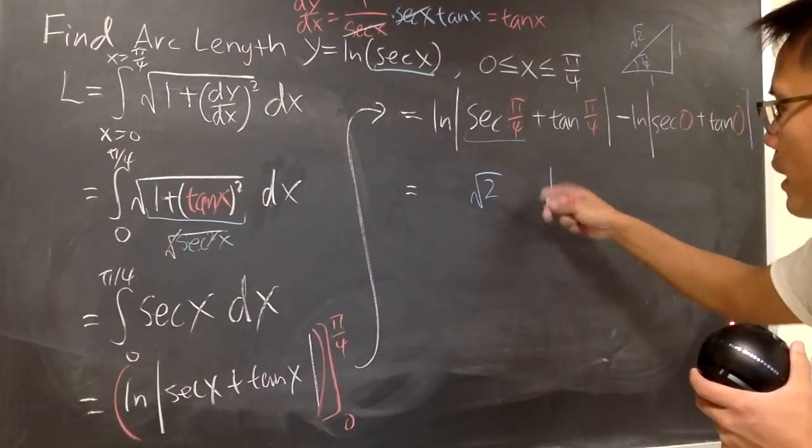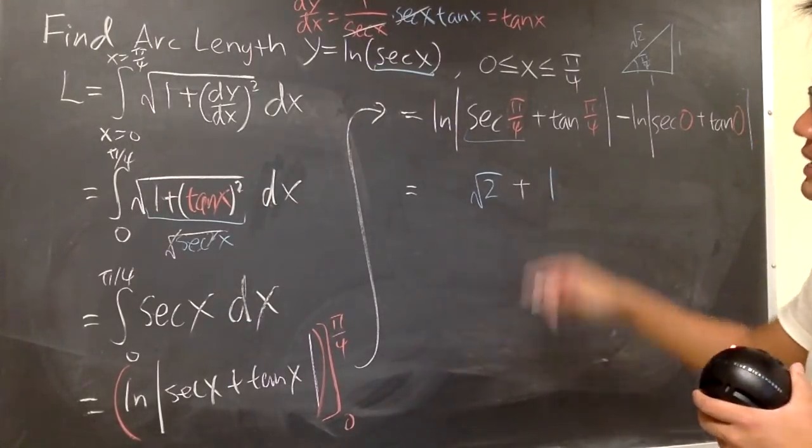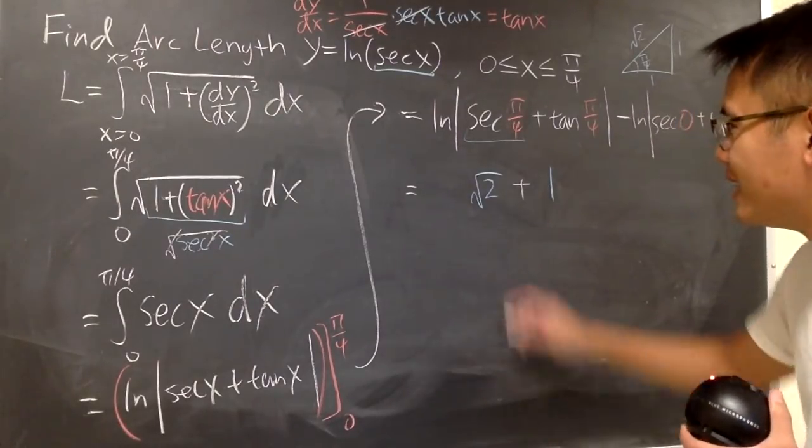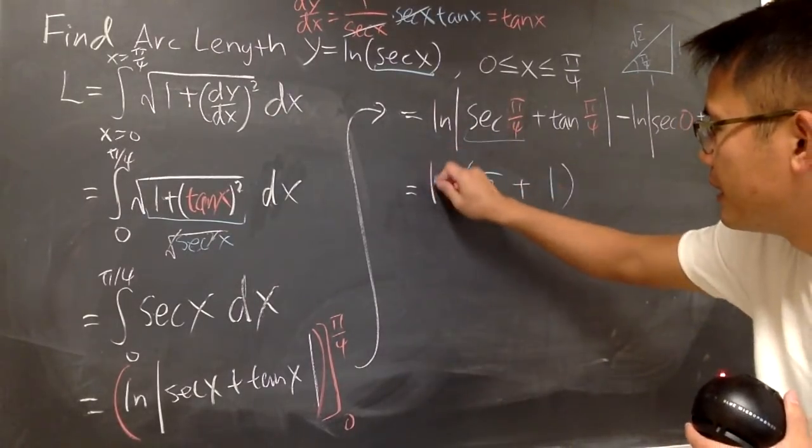So you have √2 + 1 inside. And this is positive. I told you, you didn't need the absolute value. You can just put parentheses, and then you have the ln like that.